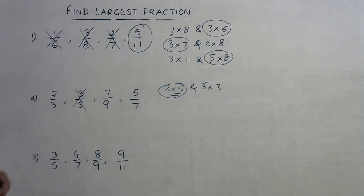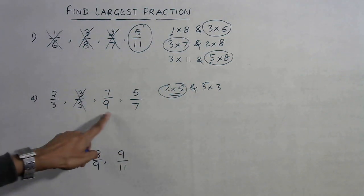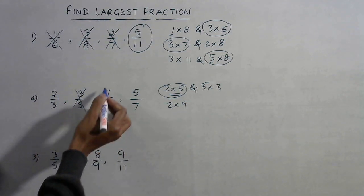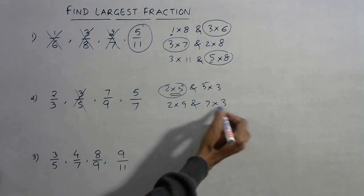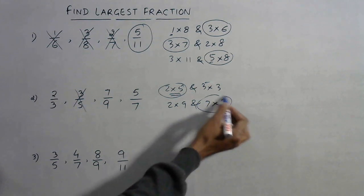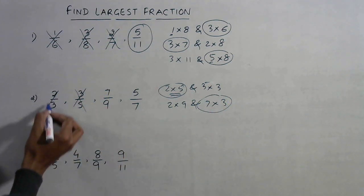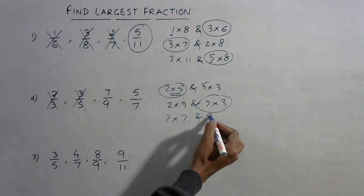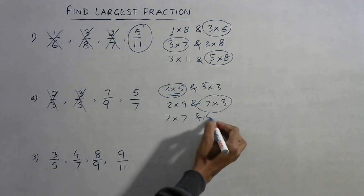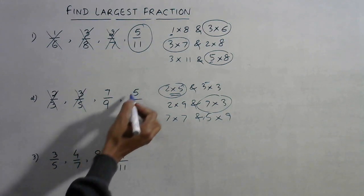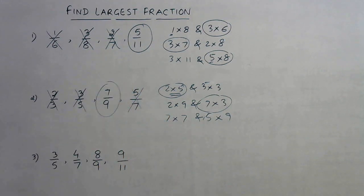Now compare 2/3 and 7/9: 2 into 9 is 18, and 7 into 3 is 21. Since 7 into 3 is larger, we retain numerator 7 and discard 2/3. Finally, compare 7/9 and 5/9: 7 into 7 is 49, and 5 into 9 is 45. Since 49 is greater, the other numerator gives the smaller product and is discarded. The largest fraction is 7/9.